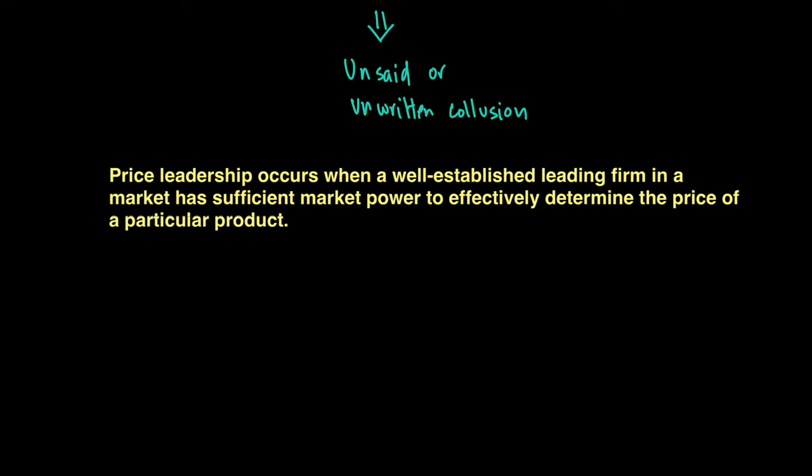An alternative price leadership model is barometric price leadership. This is a situation in which one firm tries out a price increase and then waits to see whether the other firms follow or not. If they do follow suit, then a new price will be set in the market without the need to get into any discussions between the firms, because the price is accepted by each and every player.